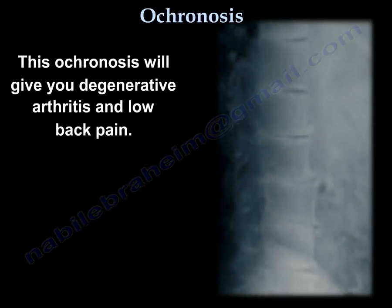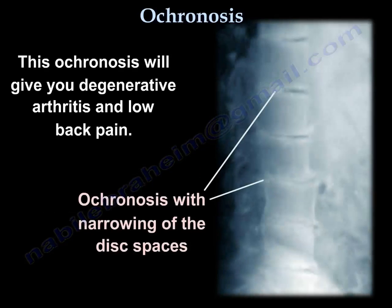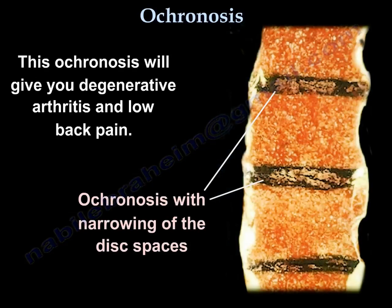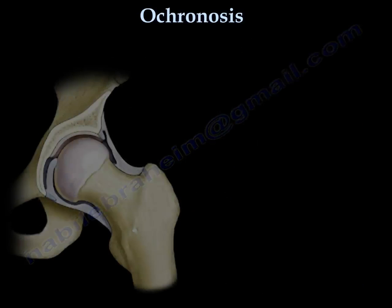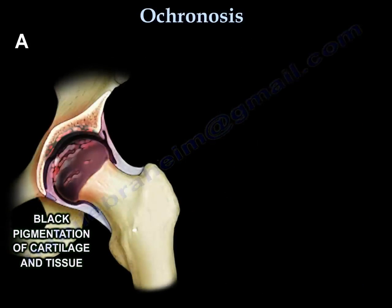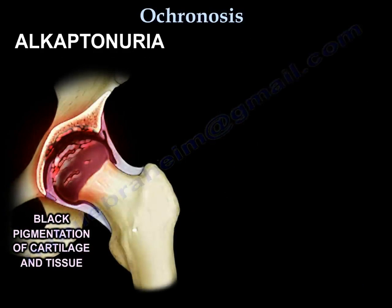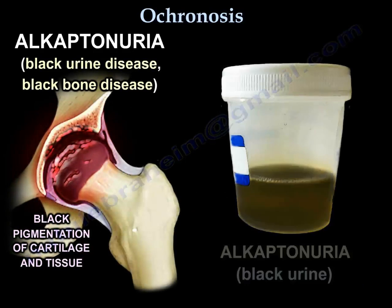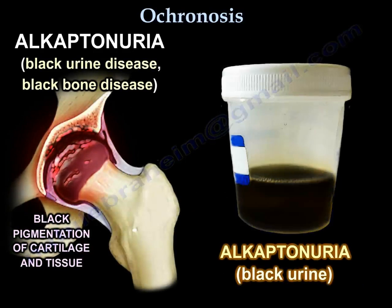Ochronosis will give you degenerative arthritis and low back pain. You also want to know the associated term called alkaptonuria, which refers to black urine and black bone disease.